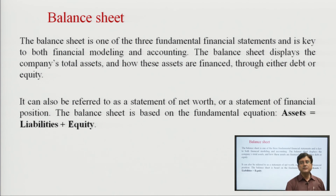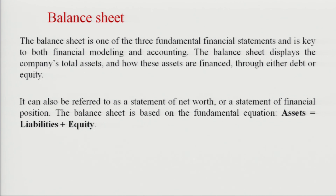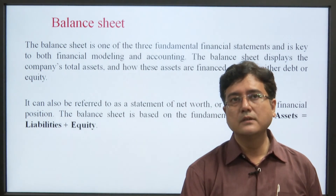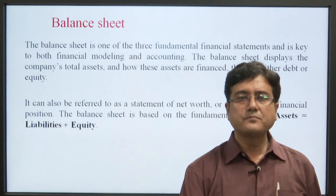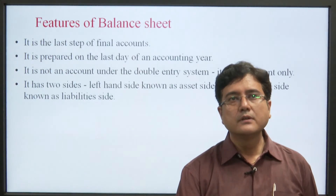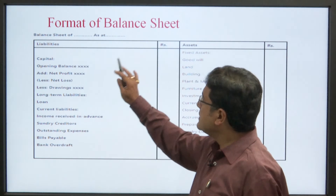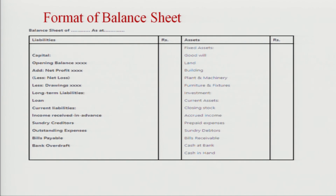The balance sheet is a statement — not an account — which has liabilities on one side and assets on the other, where assets equal liabilities plus equity. This is the specimen of the balance sheet, written as a statement 'as on' a particular date. Capital is given, with profit added or losses subtracted. All liabilities are listed on one side and all assets on the other. Liabilities plus equity equals assets.